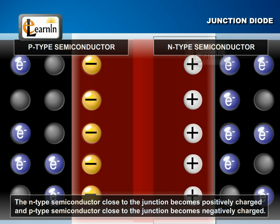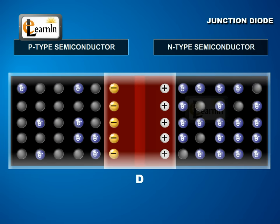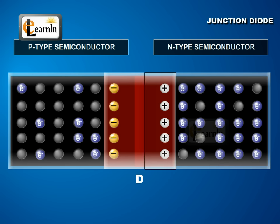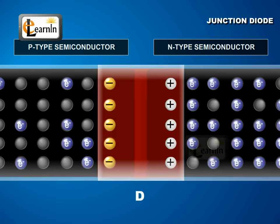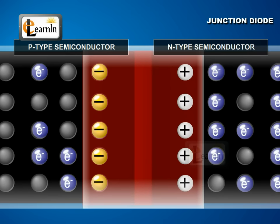The N-type semiconductor close to the junction becomes positively charged, and the P-type semiconductor close to the junction becomes negatively charged. On either side of the junction, the region D becomes free from mobile charge carriers. That is to say, on the N-type side of D, no free electrons exist, and on the P-type side of D, no holes exist. In the region of D, only immobile donor and acceptor ions exist.